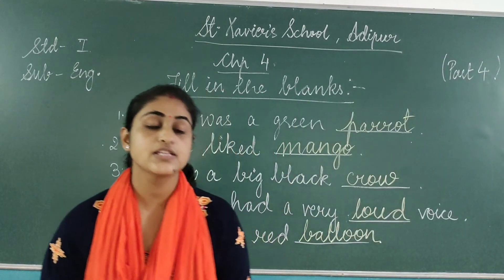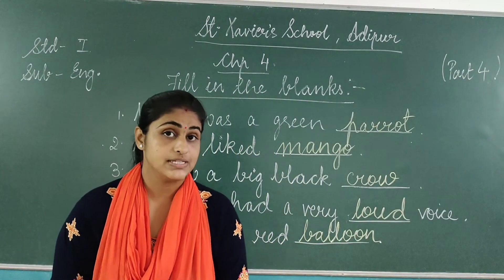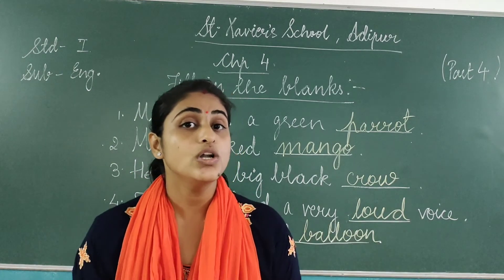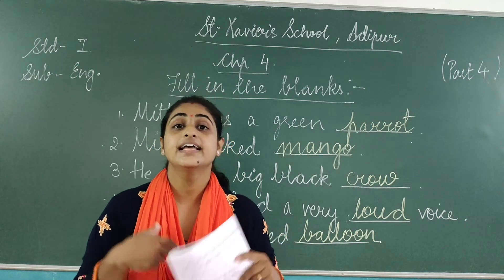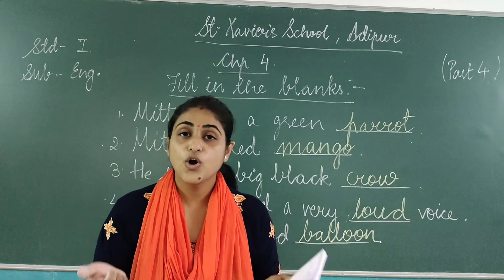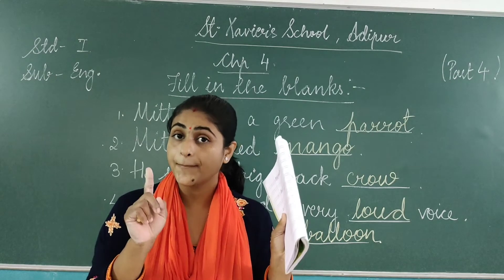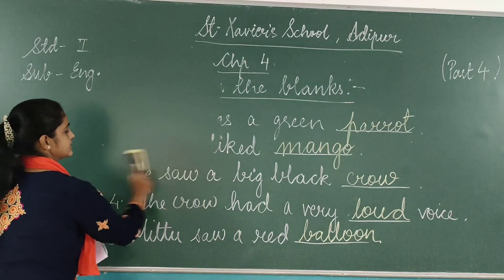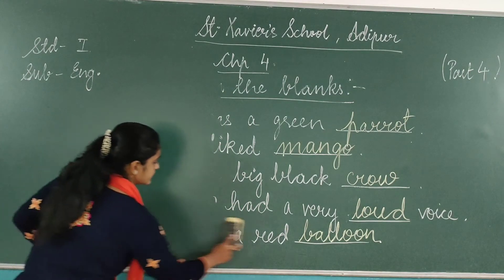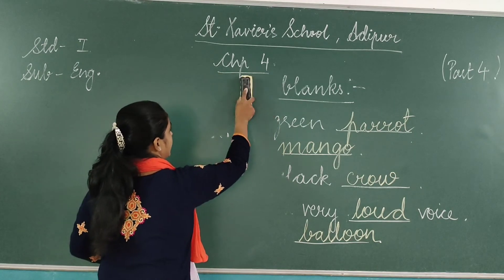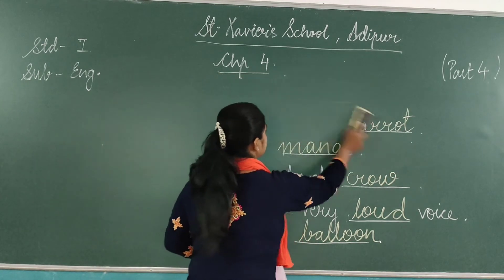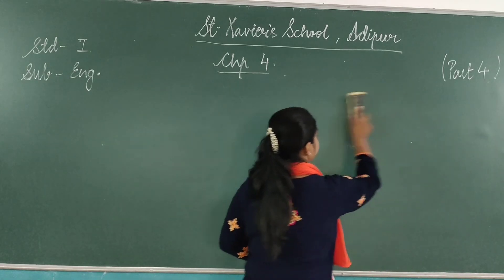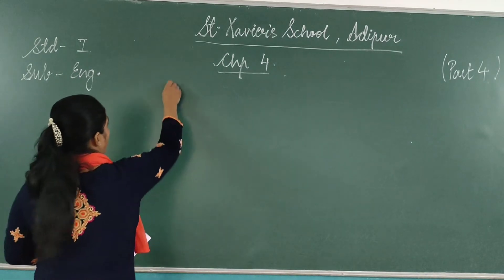Along with the fill in the blanks, you will also get opposites. Opposite means the other way around — for example: in, out; go, come; up, down. There are three opposites. So let us see and write what they are. Let us start writing — opposites.